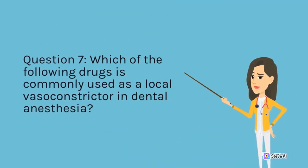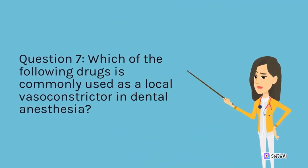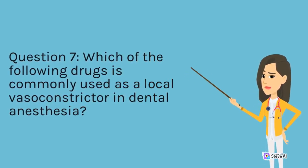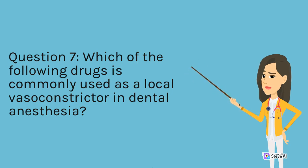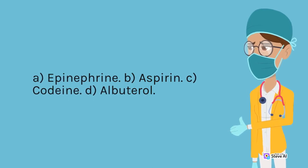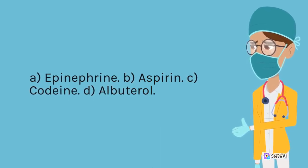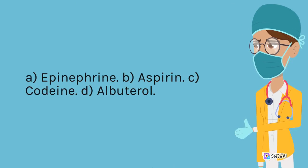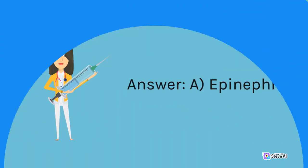Question 7. Which of the following drugs is commonly used as a local vasoconstrictor in dental anesthesia? A. Epinephrine. B. Aspirin. C. Codeine. D. Albuterol. Answer: A. Epinephrine.